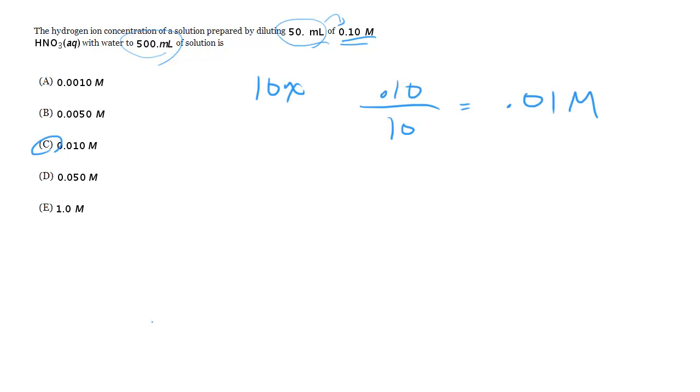If you want something a bit more rigorous, we can also do it this way. So notice we've got 50 mL of 0.10 molar. So what we can do is we can get the moles here, the moles of HNO3, and then put that moles over the new volume and get the new molarity.